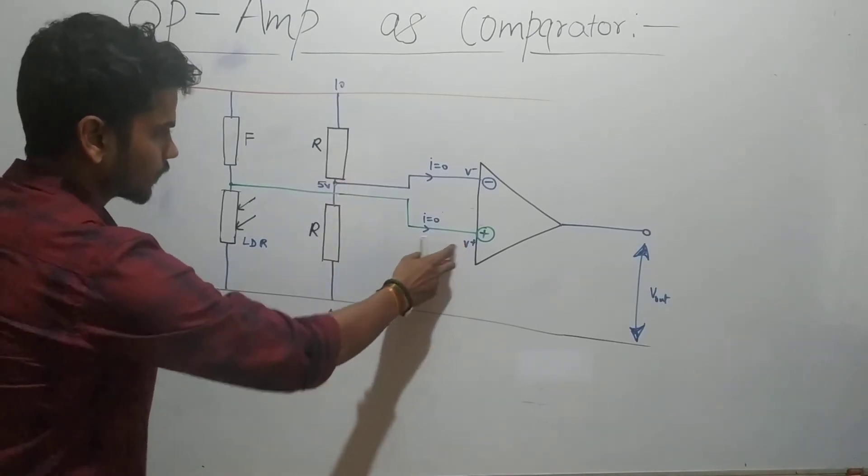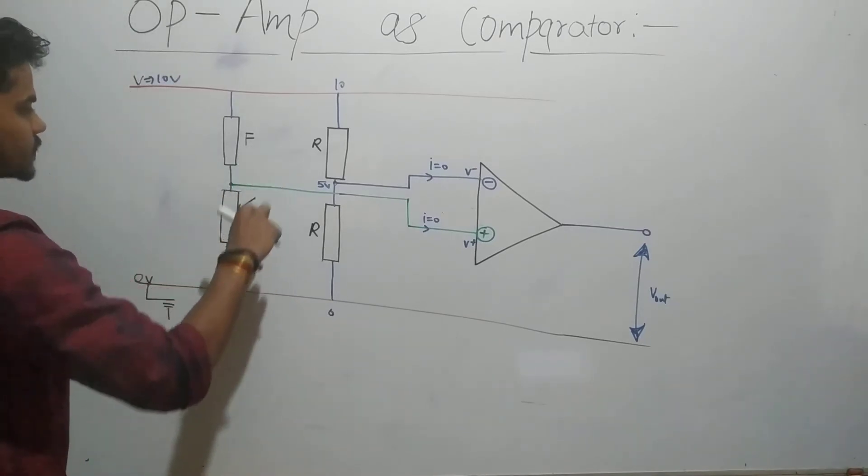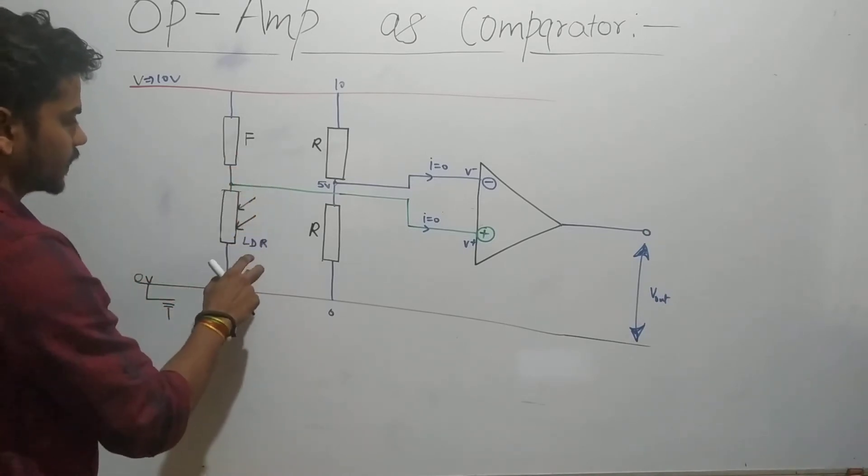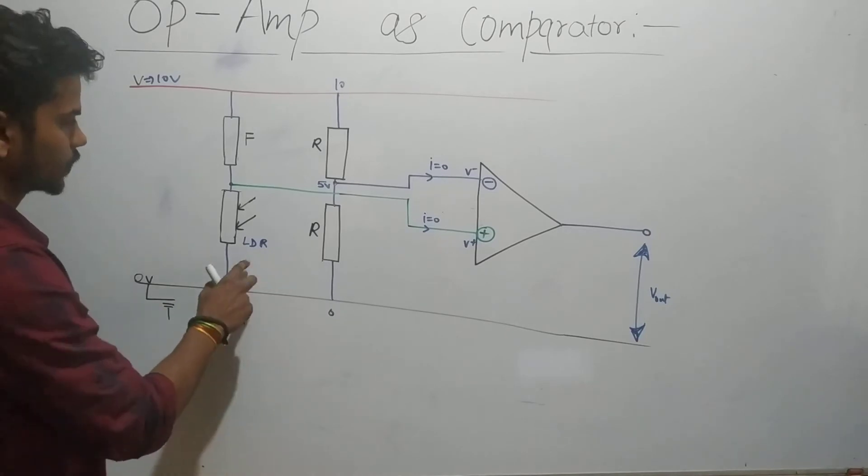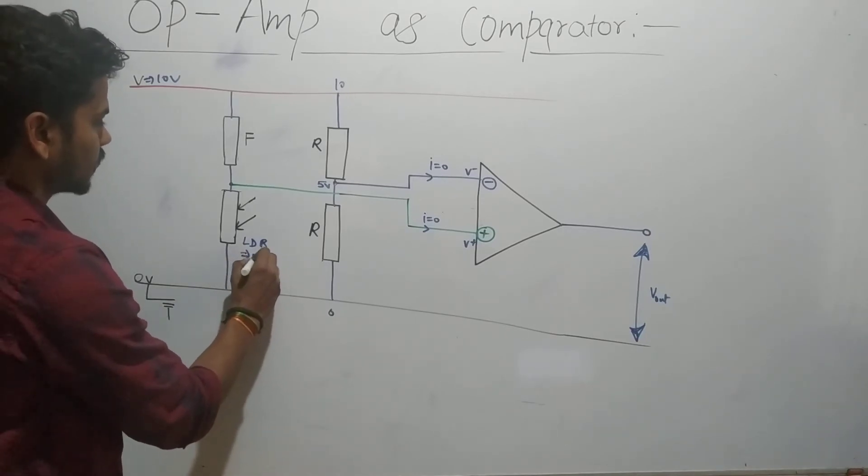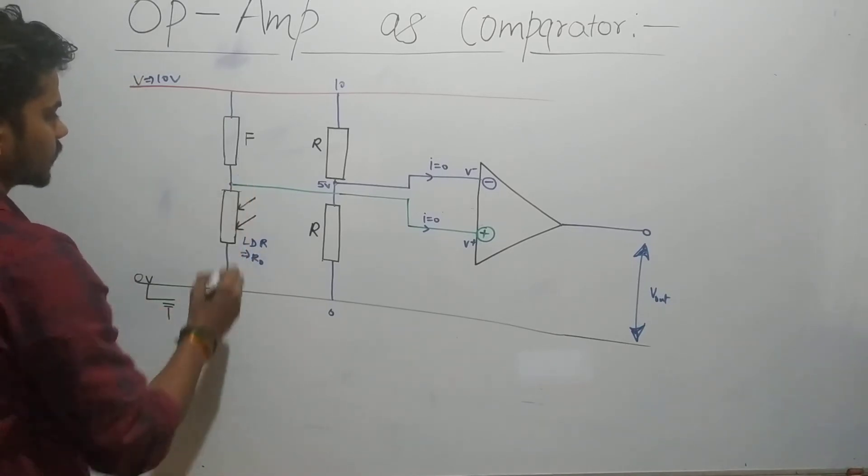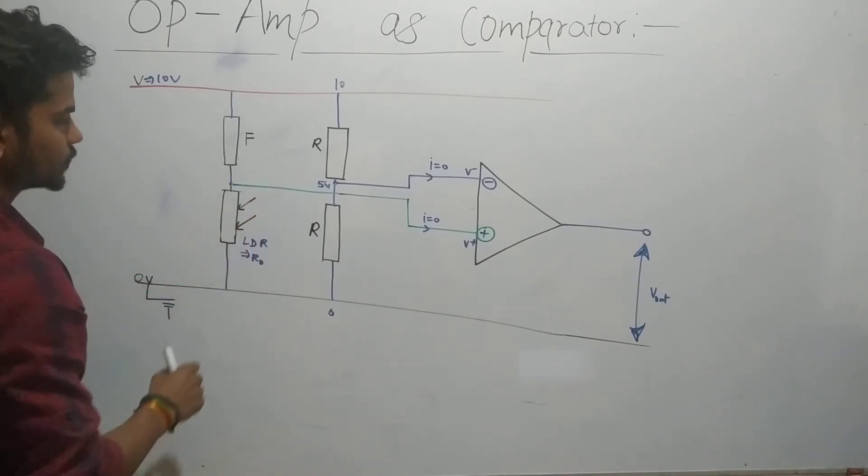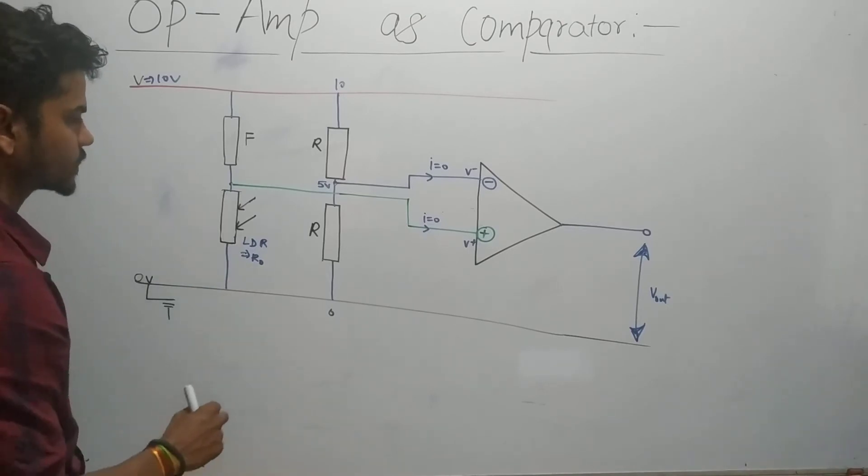Similarly, in this branch there is no current going through it. Again, the division will be based on these two resistances. We have a fixed resistance here and an LDR, which is a variable resistance based on the amount of light falling on it. Let's call it R_naught. For finding voltage across that, it will depend on the resistance values, which one is greater, which one is less. We'll go case by case.